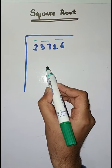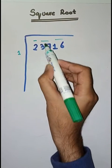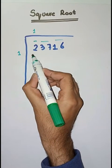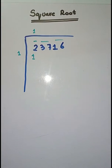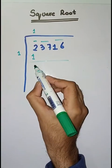So first we have to solve 2. So we take a number 1. 1 times 1 is 1. Minus is 1. 2 minus 1 is 1.